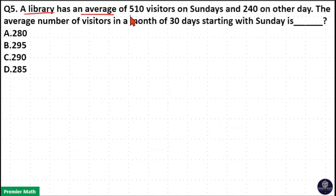A library has an average of 510 visitors on Sundays and 240 on other days. The average number of visitors in a month of 30 days starting with Sunday.